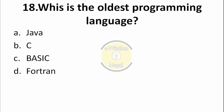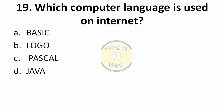Question 18/19: Which computer language is used on the internet? Options: BASIC, Logo, Pascal, Java. Java is used on the internet — it is a computer programming language used online. Option D — Java — is the correct answer.